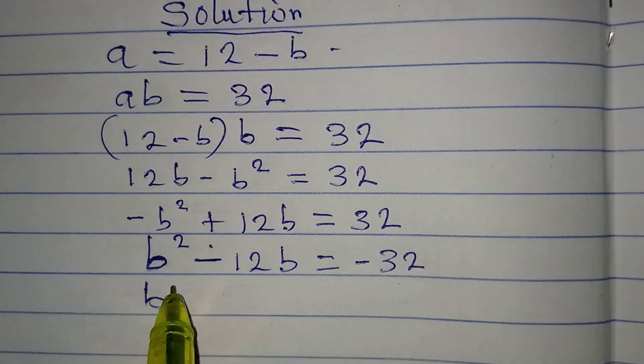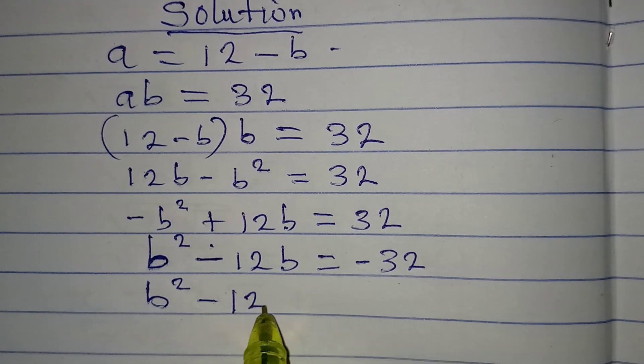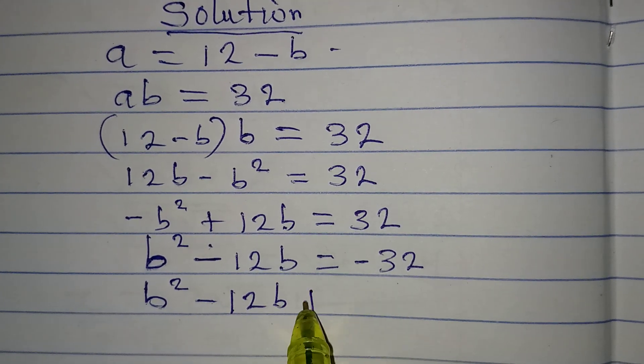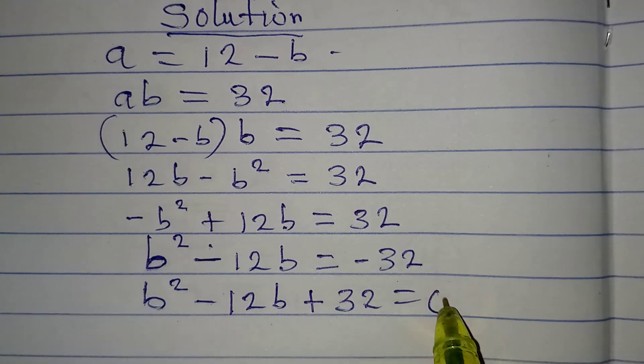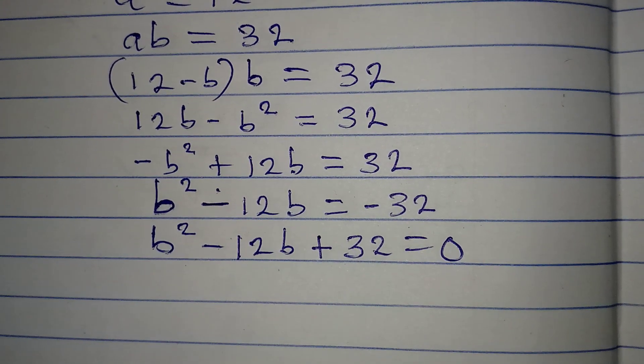Now bring everything to the left, so we have B squared minus 12B, then this becomes plus now, plus 32, equals 0. And now we have a quadratic equation.